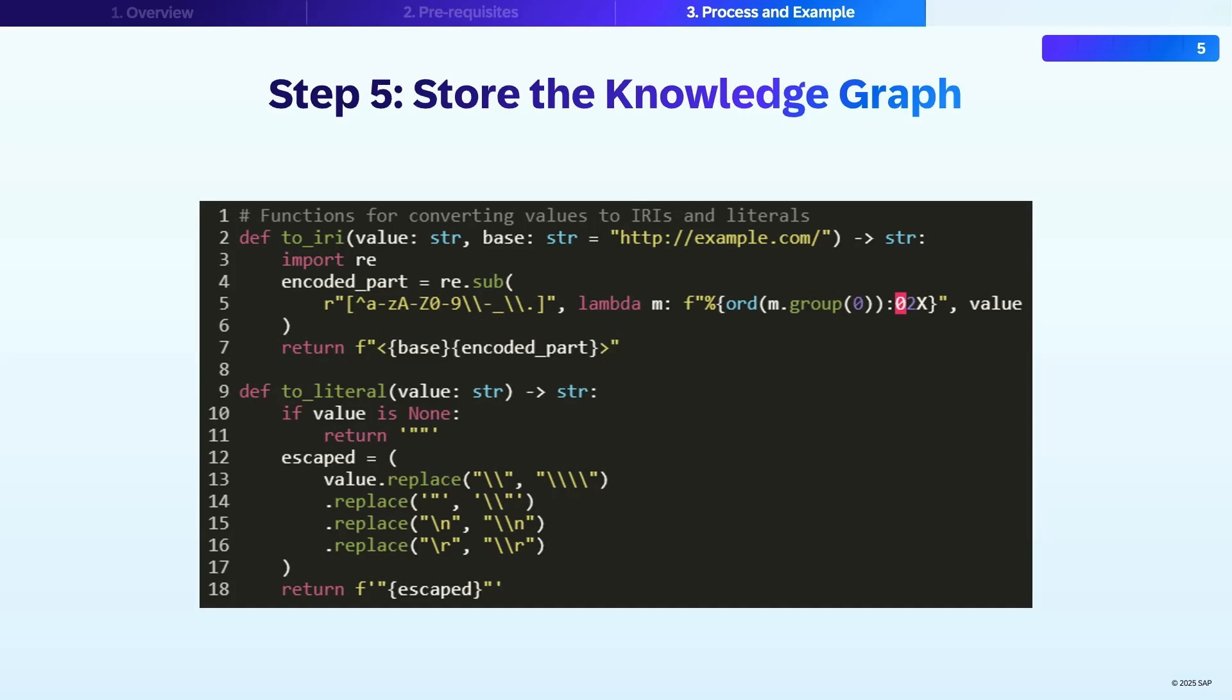First, for each triple subject, predicate, and object that represents entities are converted to IRIs using IRI, while values such as numbers or texts are treated as literals with appropriate escaping to prevent formatting errors.